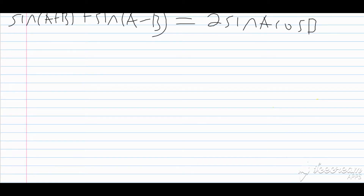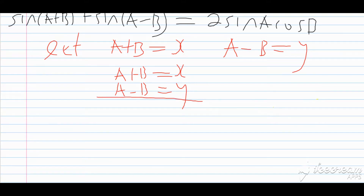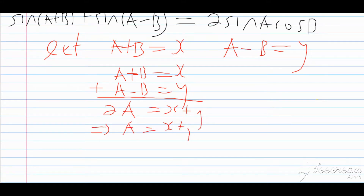What if we say: let A plus B equal X, and A minus B equal Y. We can solve for A and B just like a simultaneous equation using elimination. When we add the two equations, the B's cancel and we get 2A equal to X plus Y, which implies that A equals X plus Y over 2.